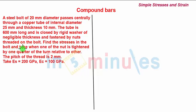Find the stresses in the bolt and tube when one of the nuts is tightened by one quarter turn relative to the other. The pitch of the thread is 2 mm. The Young's modulus of steel Es is 200 GPa and copper Ec is 100 GPa.